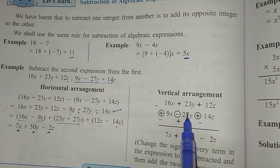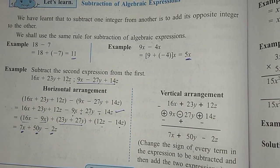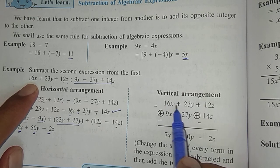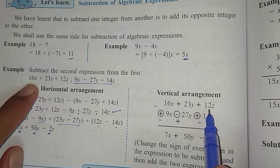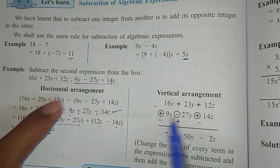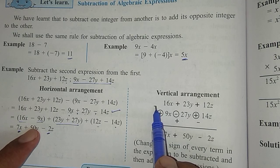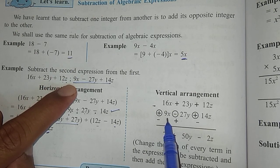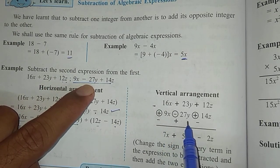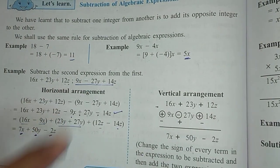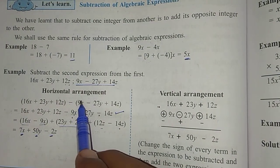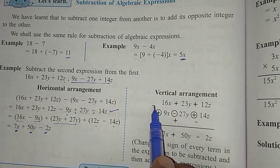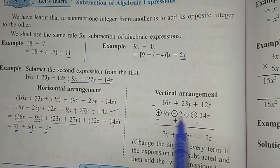Now let us see the vertical method. Write the first expression: 16x plus 23y plus 12z, then minus, and the second expression: 9x minus 27y plus 14z. As I explained in the horizontal method, because of the minus sign, all signs change in the same way here also.